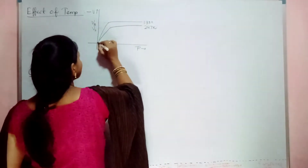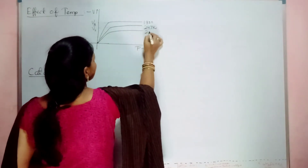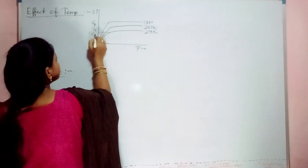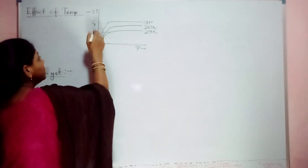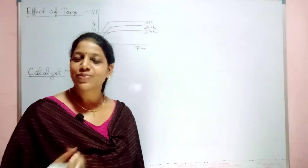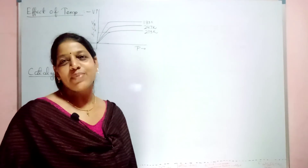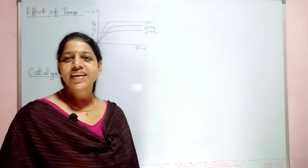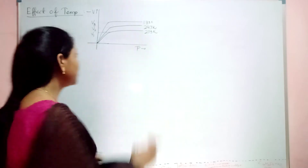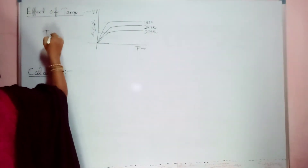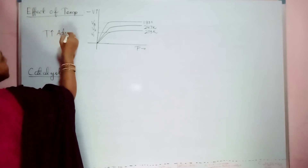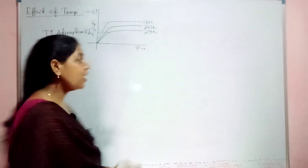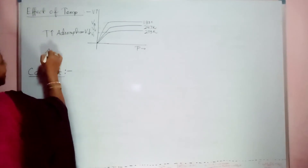Again increase the temperature to around 273 Kelvin. What you find? Again your volume reduces further to V1. So what you are observing: increase in temperature causes the rate of adsorption to decrease. Volume decreases means your rate of adsorption decreases. Increase in temperature — adsorption volume decreases.